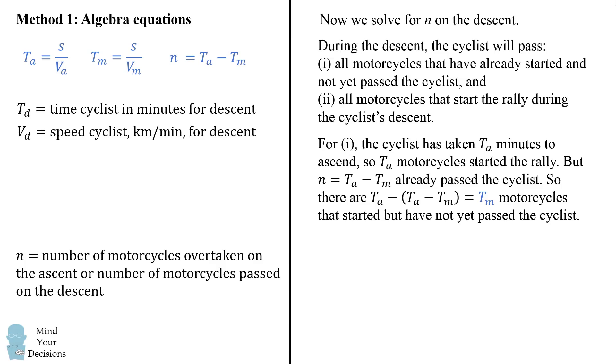Now for case 2 we need to consider the time of the descent. This will be equal to the length of the climb divided by the speed of the descent. Now the speed of the descent is given to be twice the speed of the ascent, so this simplifies to be half the time of the ascent.